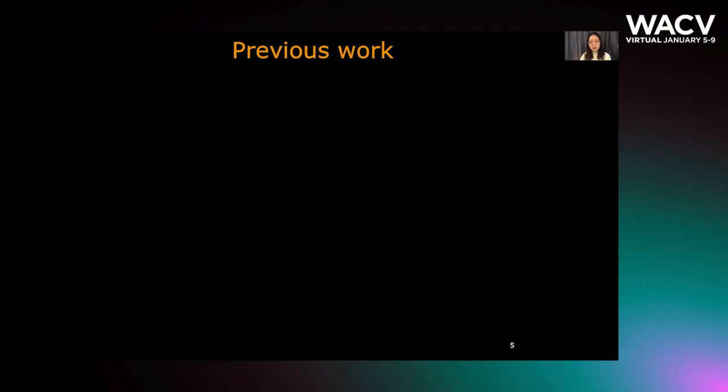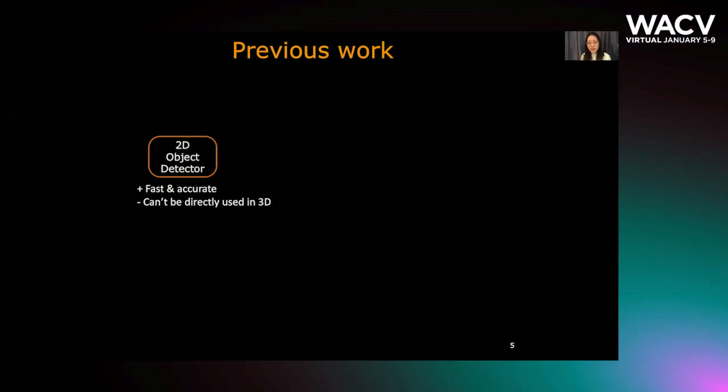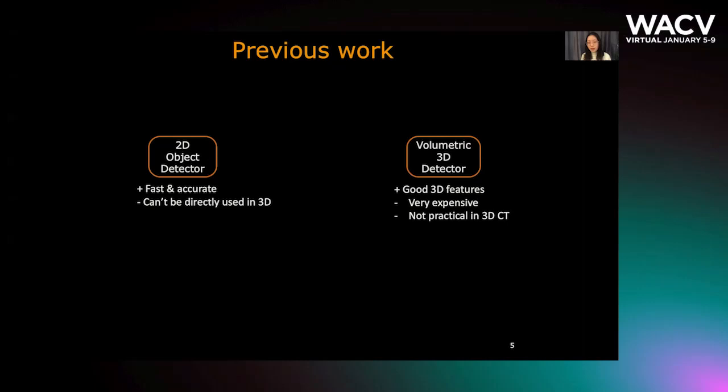Since there are lacking large-scale datasets for weapon detection in 3D CT scans, few deep learning methods have been adapted to this task. Even with enough data, adapting CNNs for weapon detection is not trivial. Current 2D detectors are fast and accurate, but they can't be directly used in 3D. Volumetric 3D detectors such as VoxelNet provide good 3D features, but are very expensive when applied to baggage scans, since baggage scans have a much higher resolution.